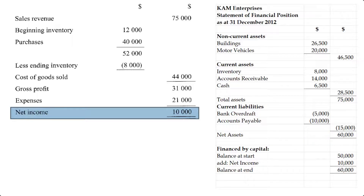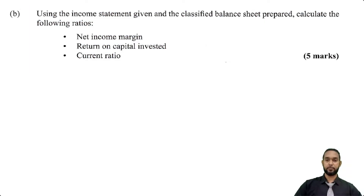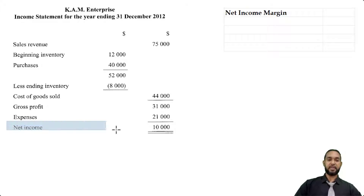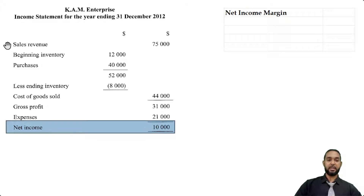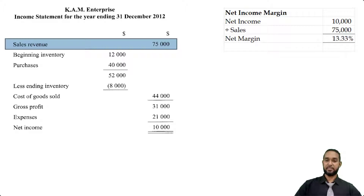Let's take a look at part B, which wants us to calculate three ratios: net income margin, return on capital invested, and the current ratio. For the net income margin, we can find that information in the income statement. It simply requires us to take net income and divide it by the sales revenue: 10,000 divided by 75,000, which comes to about 13.33%.